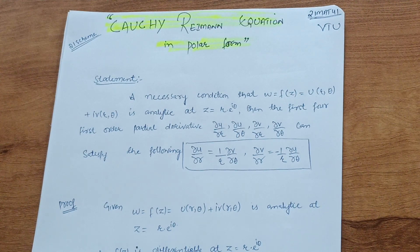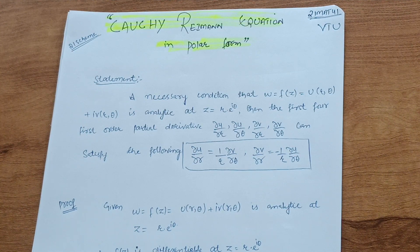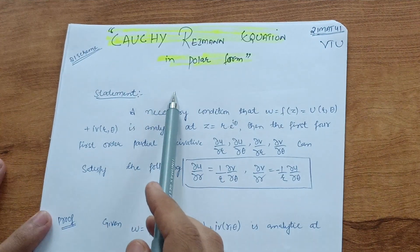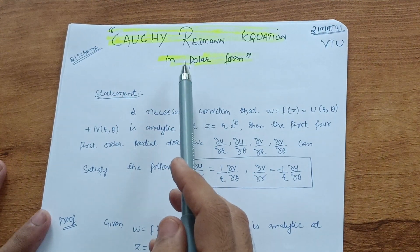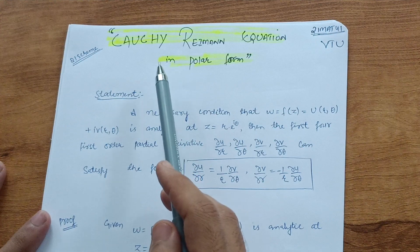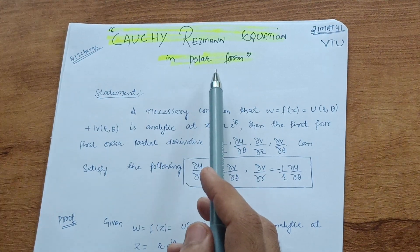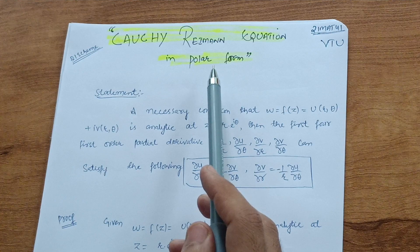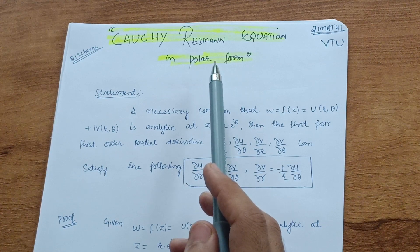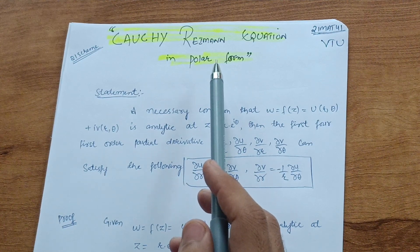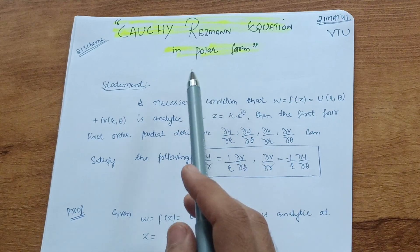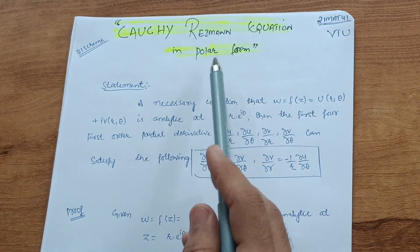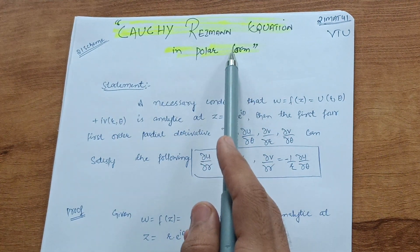Hi friends, hope you are doing well. Welcome back to my channel. Today I am with another video for the Cauchy-Riemann equation. In the previous video I discussed the Cauchy-Riemann equation in Cartesian form, so in this video we will try to solve the Cauchy-Riemann equation in polar form. I have started the problem solving series for 21 scheme and 22 scheme students.